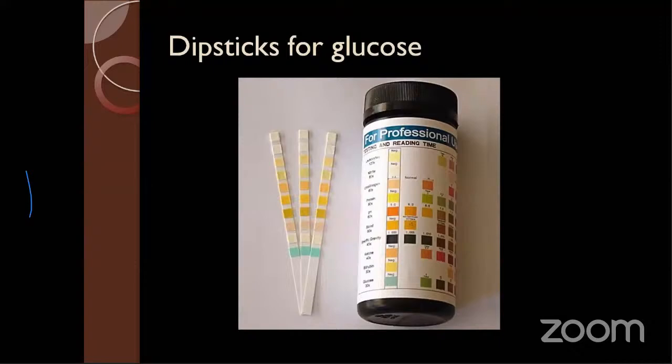There are easy methods nowadays to detect the presence of chemical substances — there are dipsticks. You can use them for protein and glucose analysis. Ideally, the renal threshold is 180 mg/dL; when blood glucose crosses this level, sugar will spill out into the urine.